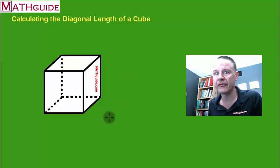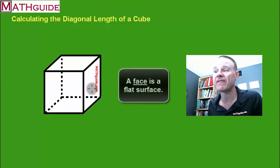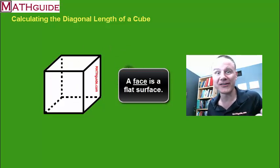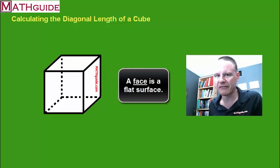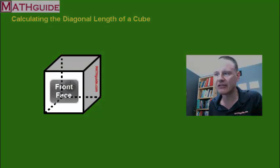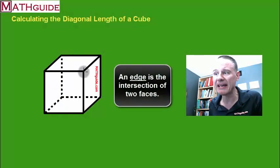Before we get to where the faces meet, let's talk about what a face is. A face is a flat surface. If you picture rolling a die, this looks like a six-sided die and there are six faces. So a flat surface is a face — here's the right face, the front face, the top face, and so on. Where two faces meet forms an edge.